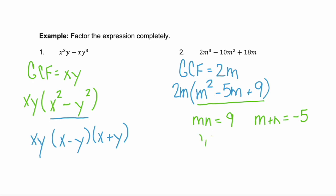We have 1 and 9, and we have 3 and 3. Do either of those add to negative 5? No, so that trinomial is prime.